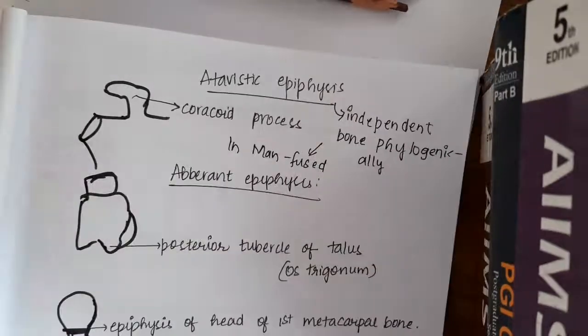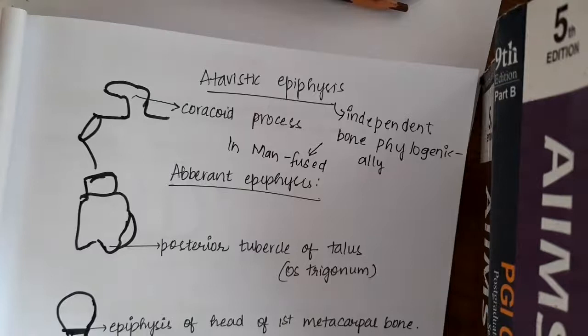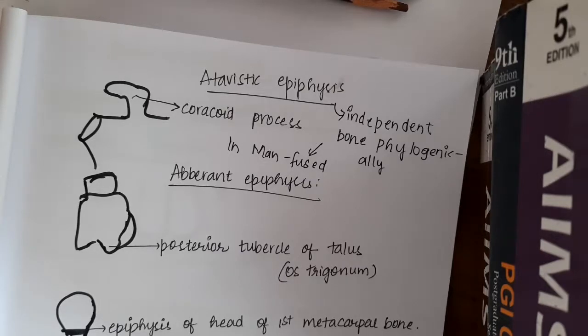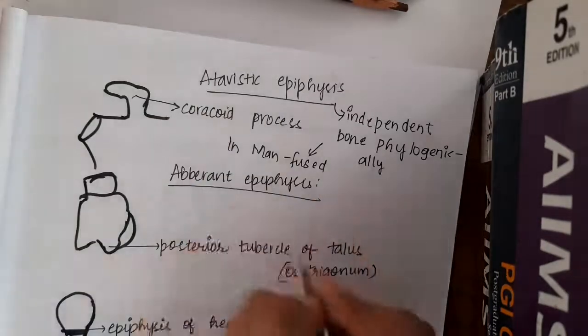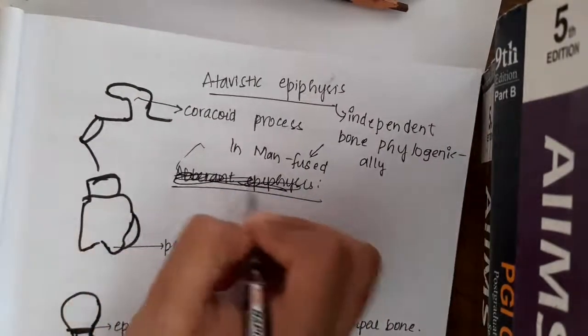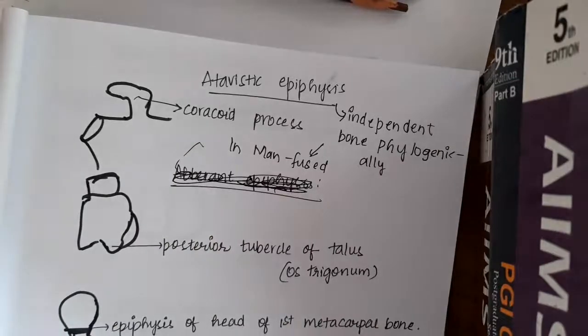Example of this is coracoid process is an atavistic epiphysis. Coracoid process of scapula, sometimes os trigonum or posterior tubercle of talus is also called as atavistic epiphysis. This is also given as atavistic epiphysis.